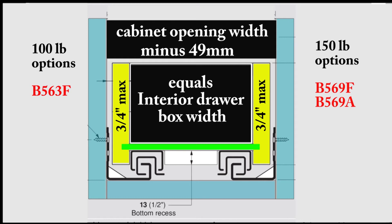Now, if you want to know what the outside drawer box width is, you simply add the thickness of your drawer side panels, which are a maximum of three-quarters of an inch thick, and you will have your drawer box width.